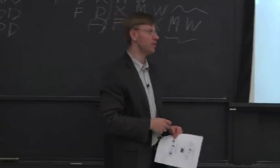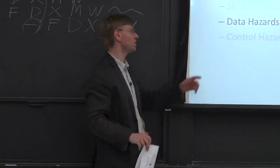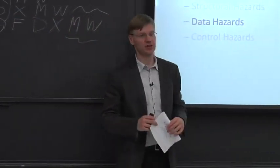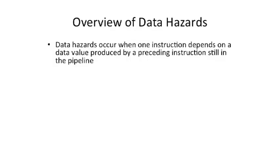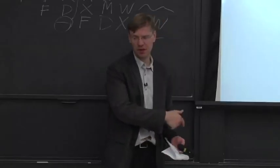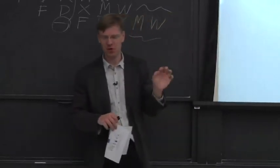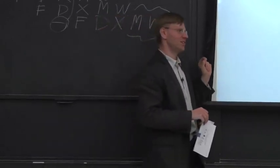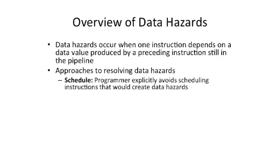We've talked about structural hazards, and now we're going to move on and talk about data hazards. A data hazard occurs when you have one instruction that depends on a data value generated by a previous instruction which is still in the pipeline.